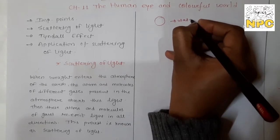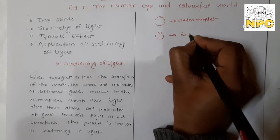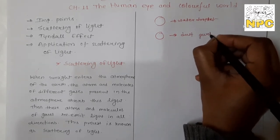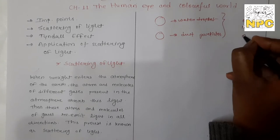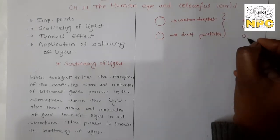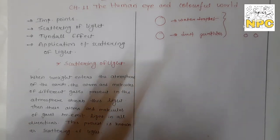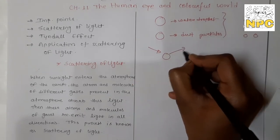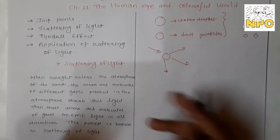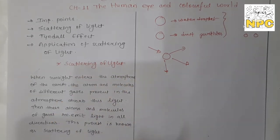So if we talk about the atoms and molecules of gases like oxygen and nitrogen, they are very tiny compared to dust particles and water droplets. When light rays are incident on particles, those particles absorb the light and then re-emit the light in different directions. This phenomenon is called scattering of light — meaning light spreads out in different directions.